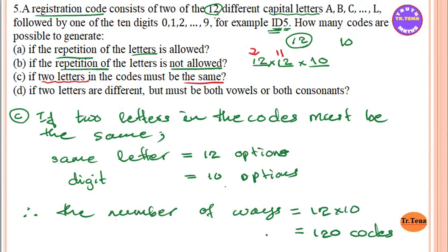Now, if the two letters are different but must both be vowels or both be consonants — if you have a vowel, you can use A, E, I, O, U. That gives you five vowel options for both positions.